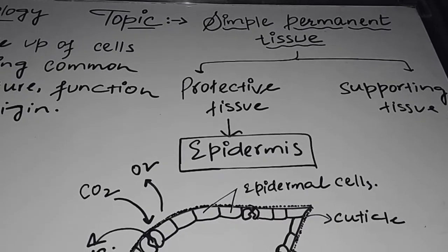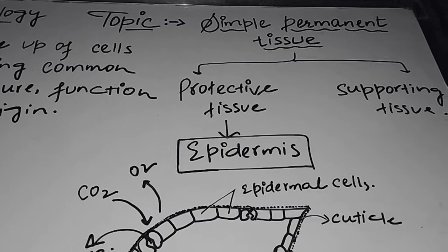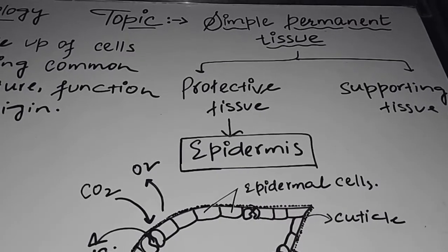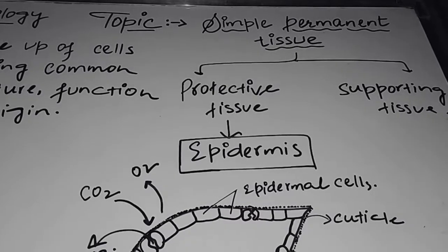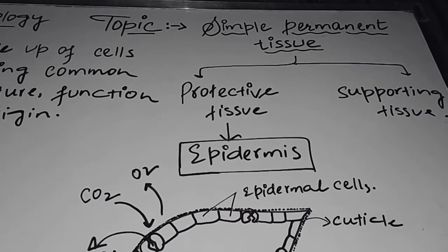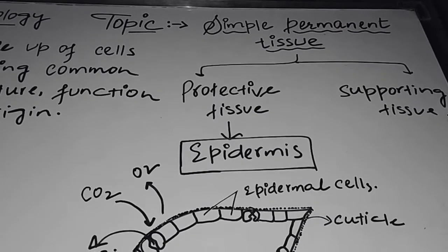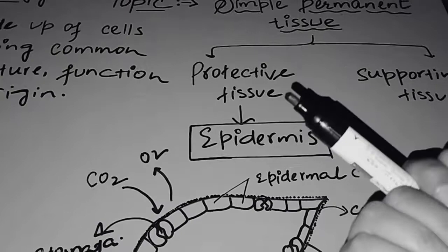We see plant body may be epidermis. That's a protective tissue that comes under simple permanent tissue. That protects the whole plant body. Each and every part of plant body, whether leaves or stem or root or shoot, etc., that is covered by this single layer of cells which is called as epidermis.